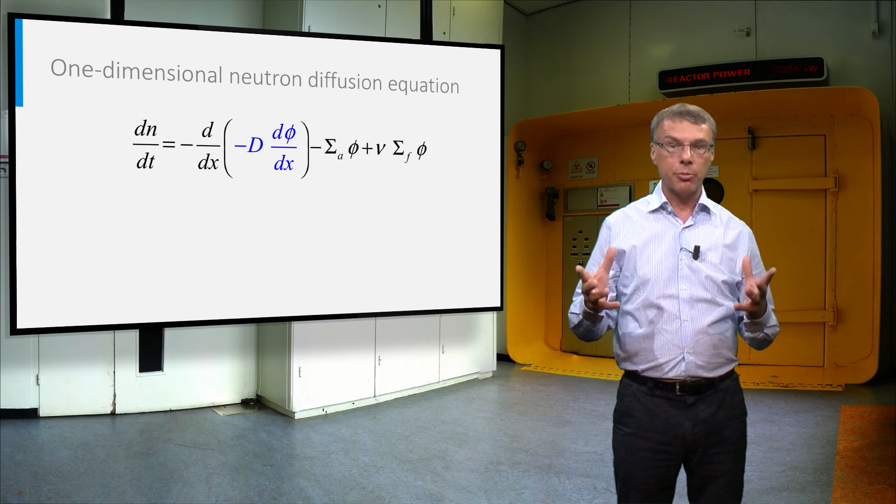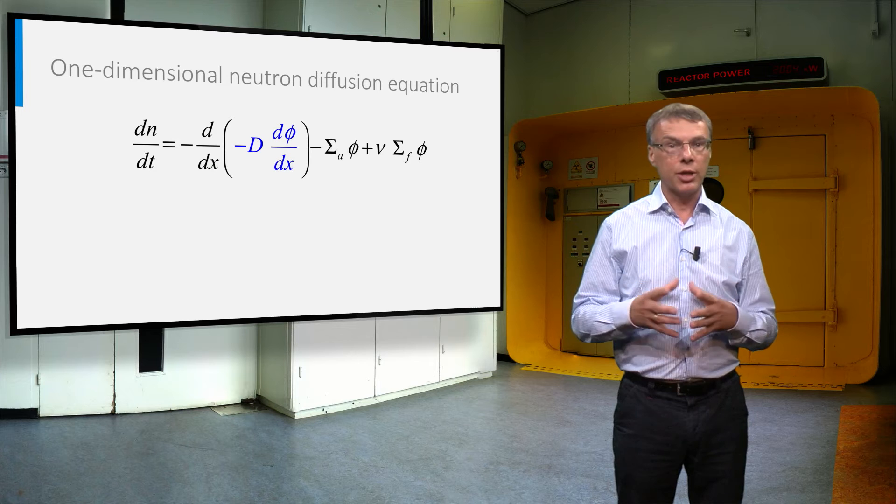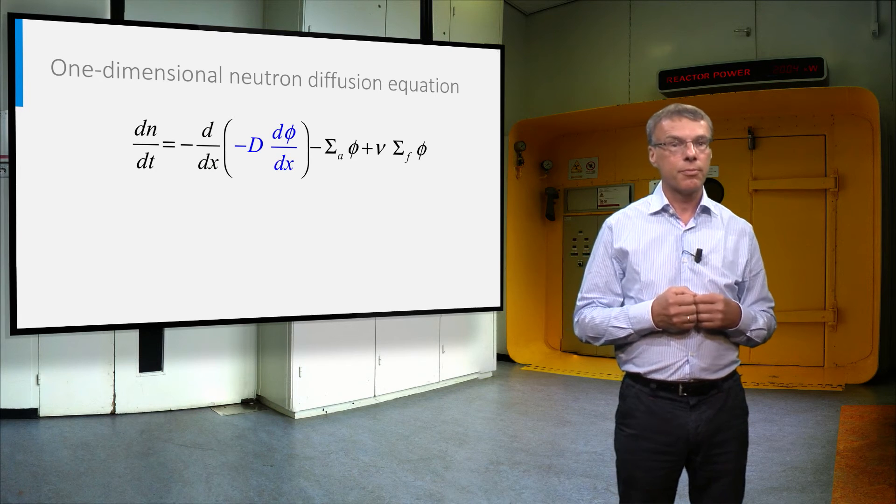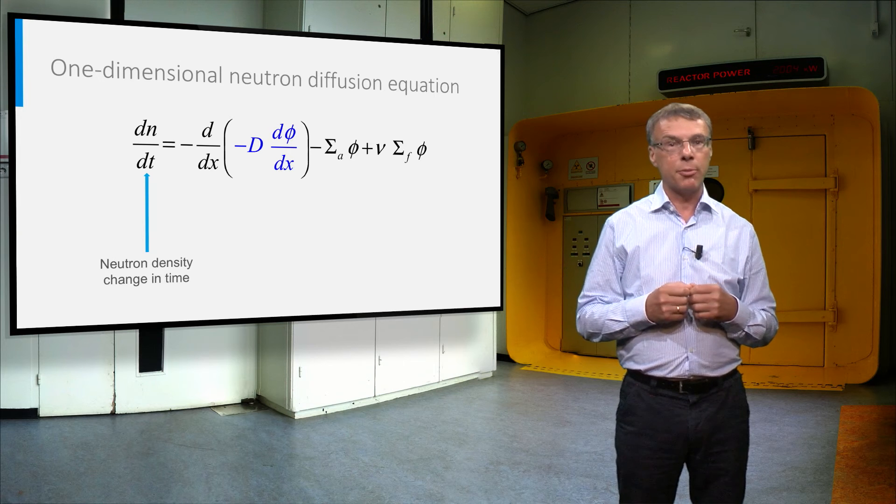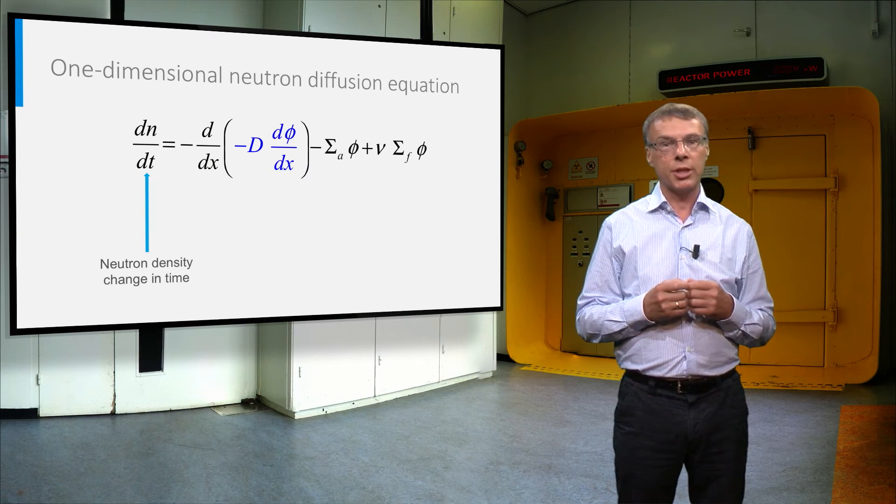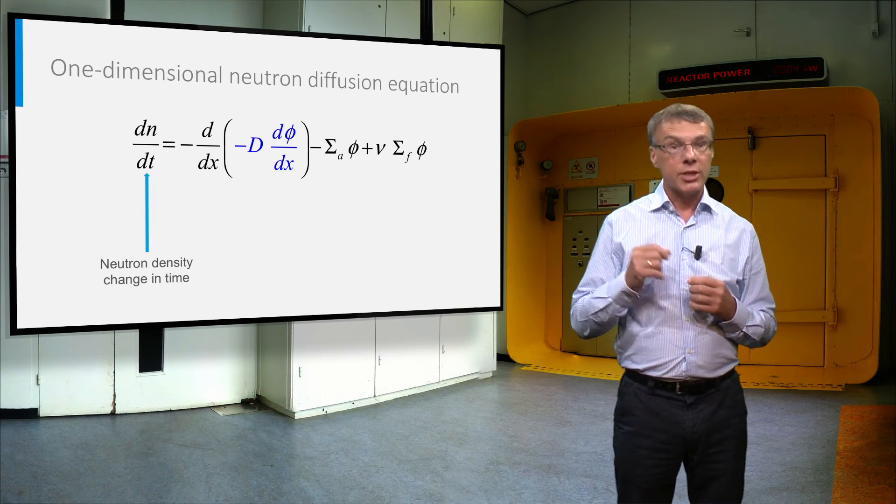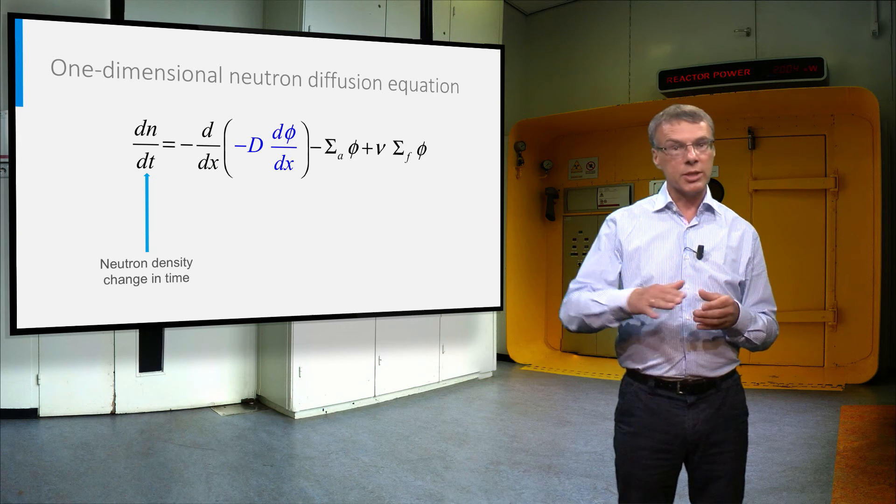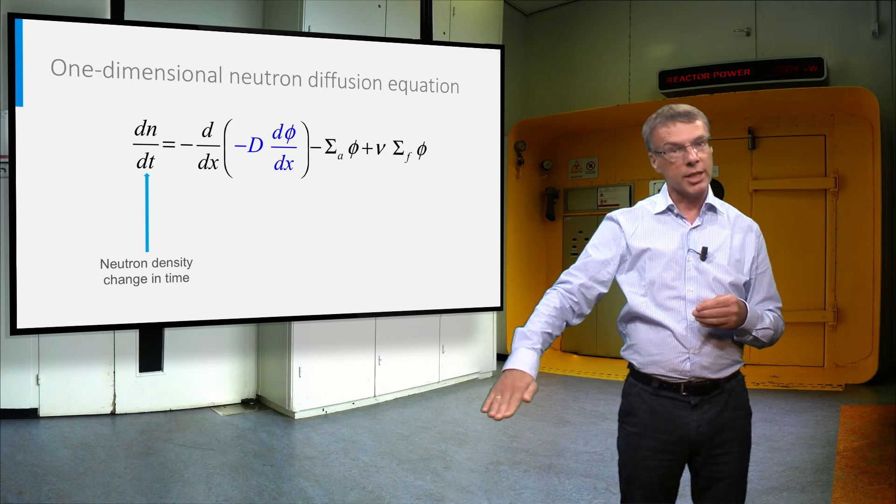We will now derive a neutron balance equation in diffusion theory by looking at each loss and gain term in a unit volume. Left of the balance is a time derivative of the neutron number density. If this time derivative is zero, we have a stationary neutron flux, otherwise it is increasing or decreasing in time.